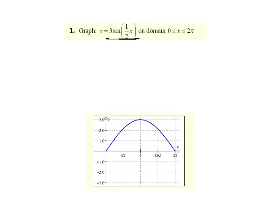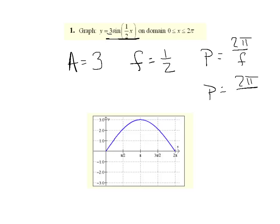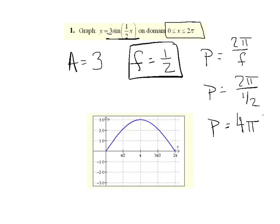Here's a 30-second challenge — try to graph this curve over the domain of 0 to 2 pi. Hit the pause button and give yourself 30 seconds. When I looked at the equation, I noticed the leading coefficient was 3, so we had an amplitude of 3. The frequency was 1 half, and therefore the period was 2 pi divided by 1 half, which gives a period of 4 pi. Since the domain is only 0 to 2 pi, we only see half the curve — the upper half of the sine curve. We start with a root, end with a root, and halfway between those two roots is our max way up at 3.